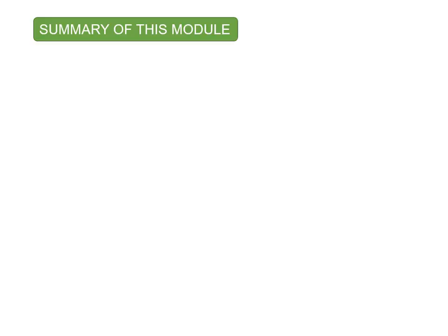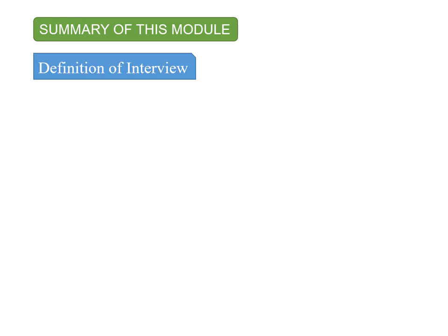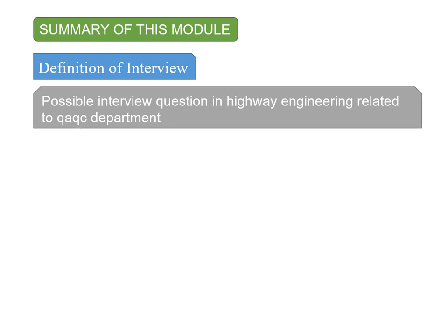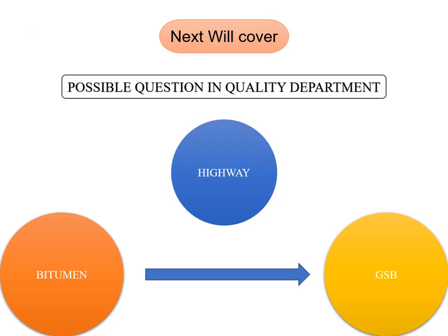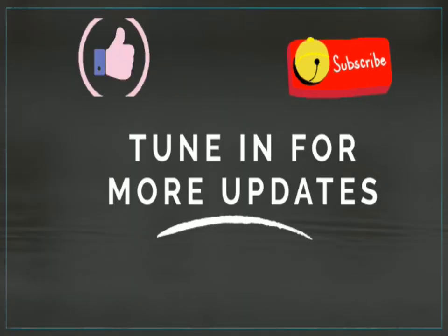To summarize this module: we talked about the definition of interviews, possible interview questions in highway engineering related to the QA/QC department, and three sets of questions on bitumen were discussed in detail. Though the questions are specific to QA/QC, they may be asked to anyone facing an interview to assess quality awareness. In the next module we will cover GSB — granular sub-base material — and typical related questions. Till then, tune in for more updates and watch the upcoming videos to gain knowledge. Thank you.